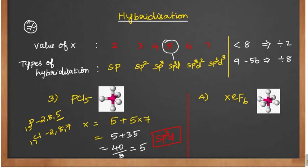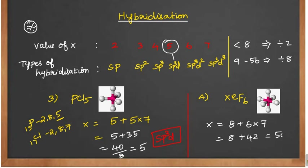Next one is xenon. We know that xenon is a noble gas, so the outermost electron is 8. Fluorine's outermost electron is 7. So 6 into 7 is 42. So 8 plus 42 = 50. We divide by 8: 6×8 is 48, remainder 2.